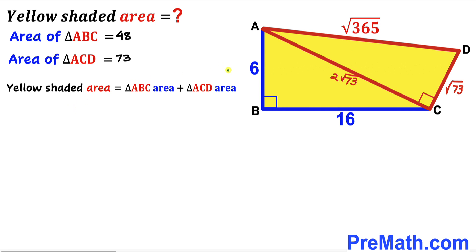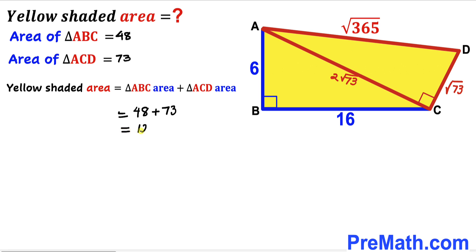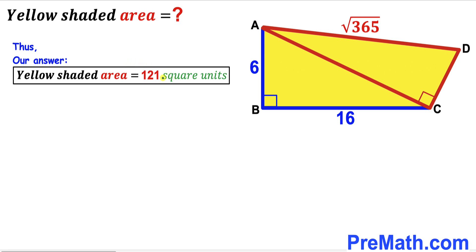For the final step, the yellow shaded area equals the area of triangle ABC plus the area of triangle ACD: 48 + 73 = 121 square units. The area of the yellow shaded quadrilateral ABCD is 121 square units — that's our final answer. Thanks for watching, and please don't forget to subscribe for more exciting videos.